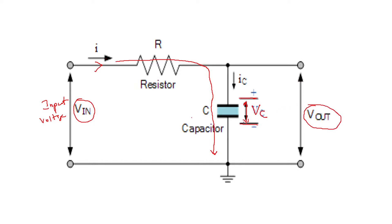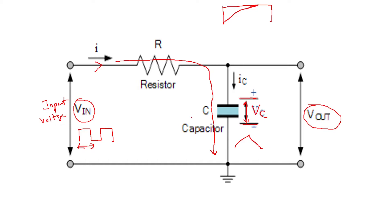The circuit operates by charging and discharging of the capacitance, which depends upon the input voltage. For example, if you give a square wave input, and the on time period is large, then the charging of the capacitor will reach the maximum — the complete input voltage will be across the capacitor — and it will remain there until it discharges.